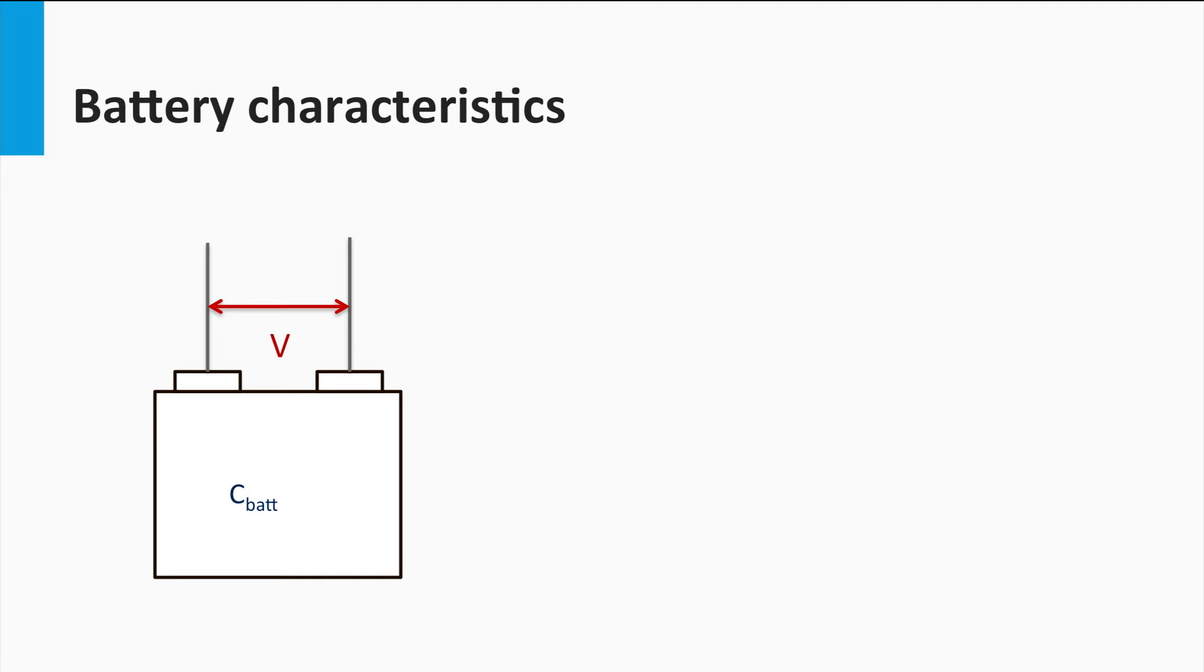We must not confuse the battery capacity with the energy capacity. Energy capacity of the battery, or any storage device for that matter, is the total amount of energy that the device can store. This is usually measured in watt-hours. How do we calculate the energy capacity of the battery, knowing the voltage and the battery capacity? The energy capacity is nothing but rated battery voltage in volts multiplied by battery capacity in amp-hours, giving the total battery energy capacity in watt-hours.